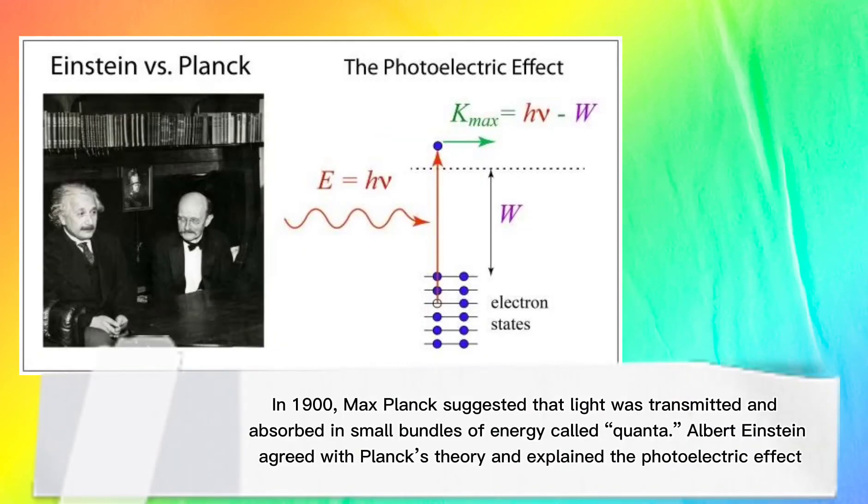In 1900s, Max Planck suggested that light was transmitted and absorbed in small bundles of energy called quanta. While Albert Einstein agreed with Planck's theory and explained the photoelectric effect using a particle model of light.